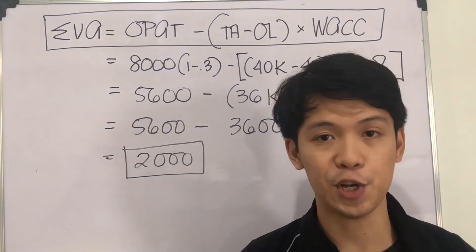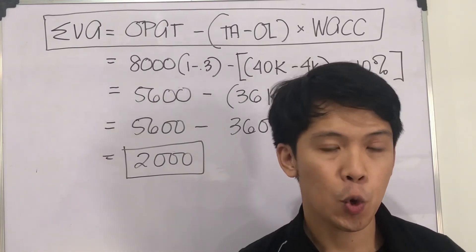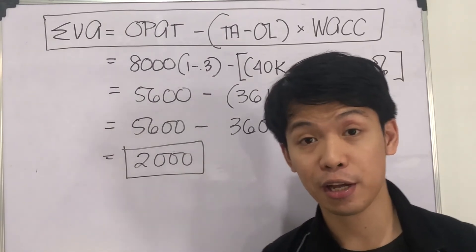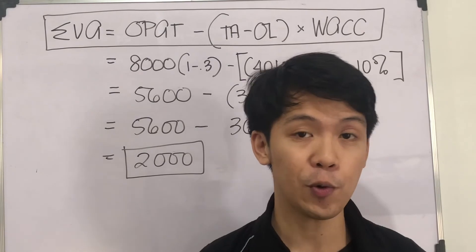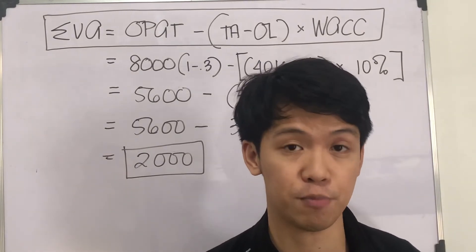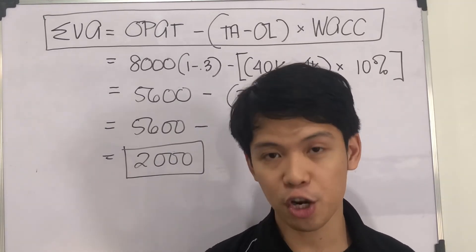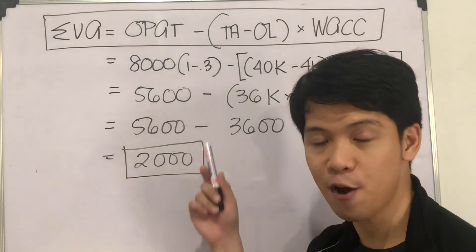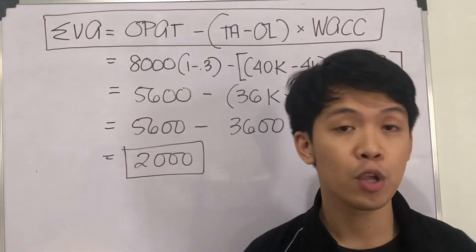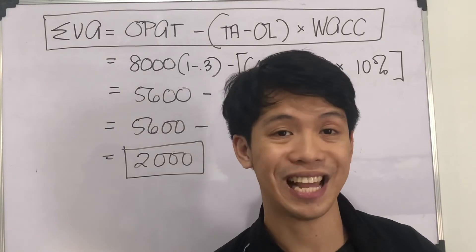This is the economic value added, also known as EVA. Again, when we calculate the residual income the way we did it a while ago, we are looking at things from the point of view of top management. But if we are going to calculate a variation of such called the EVA or economic value added, we're looking at things from the point of view of our capital providers.